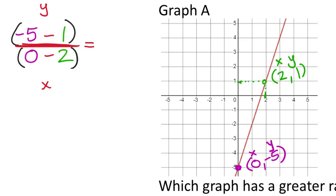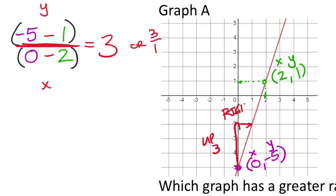When you put this in the calculator, you get a rate of change or slope of 3—positive 3. You could also say it's 3 over 1, showing the line goes up 3 and to the right 1. If you use the stair-step method with another point, you would go up 6, right 2—and 6 divided by 2 is still 3.